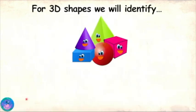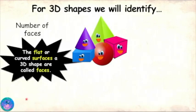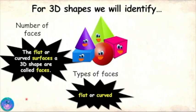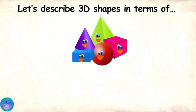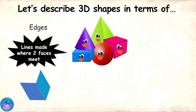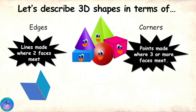For every 3D shape we will see its faces. The flat or curved surfaces a 3D shape has are called faces. We will see the total number of faces a shape has, the types of faces — flat or curved — and flat faces actually have 2D shapes. We will also see which 2D shapes make up the flat faces. We will also count the number of edges and corners a shape has. Edges are lines made when two faces meet, and a corner is a point made where three or more faces meet.